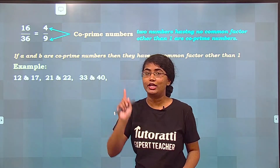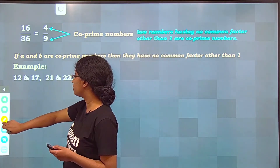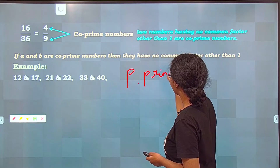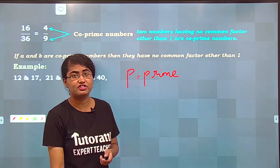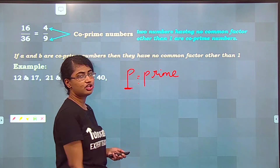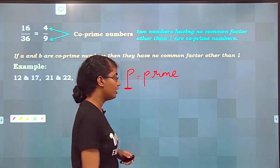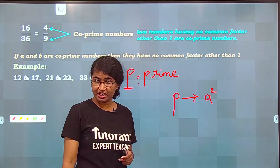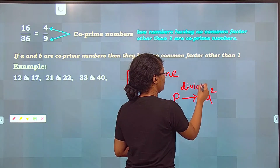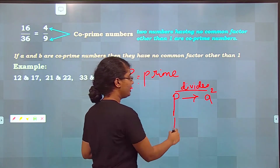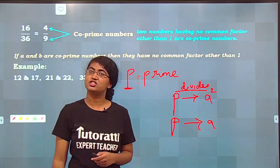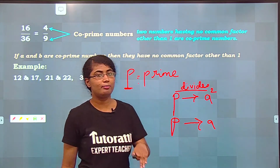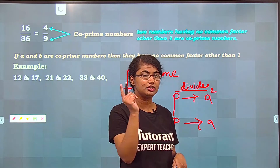Now let's talk about that axiom. Let P be a prime number — a number divisible by 1 and itself. If P divides A squared, then P also divides A. This is the axiom. If you just look at the statement itself, it may be hard to understand, so let's take quick examples to see what happens.